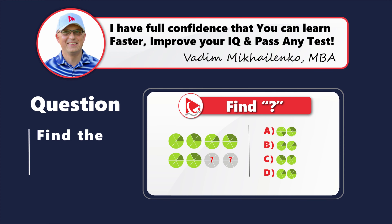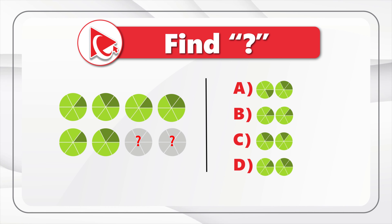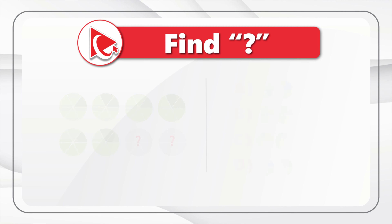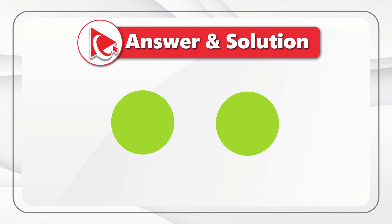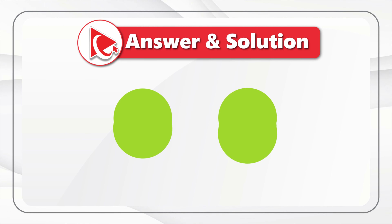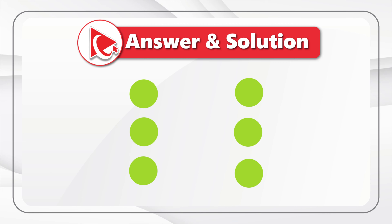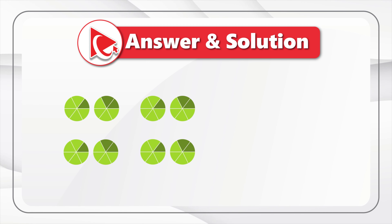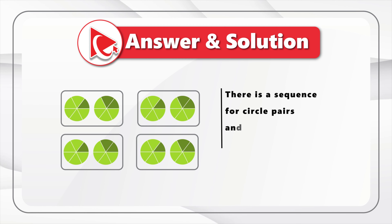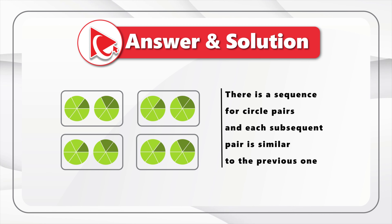Ready or not, I'm moving forward to share with you my version of the answer. And obviously, if you have a better way to solve it, please make sure to post in comments. To answer this question, we need to detect the pattern. The pattern here is very simple. Each circle is broken down into sections with darker sections and lighter sections. If you look closely, you will see that all circles are grouped in pairs, and the pattern is hidden in the sequence for circle pairs.